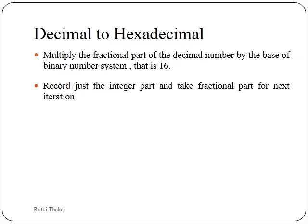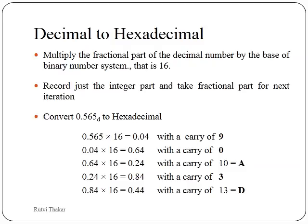Decimal to hexadecimal conversion: we take the fractional part of the decimal and multiply it by the base of hexadecimal, that is 16. Again record the integer part and take the fractional part for the next multiplication iteration. So 0.565 decimal converted to hexadecimal: multiply by 16 to get 9.04, written as 0.04 with carry of 9. 0.04 multiplied by 16 gives 0.64. 0.64 multiplied by 16 gives 10.24, where 10 is taken as the equivalent hex number which is A.